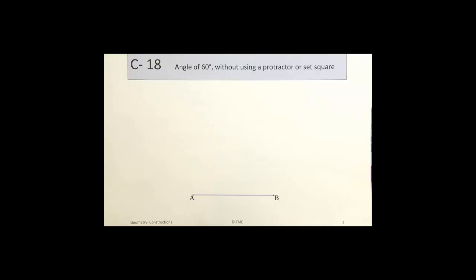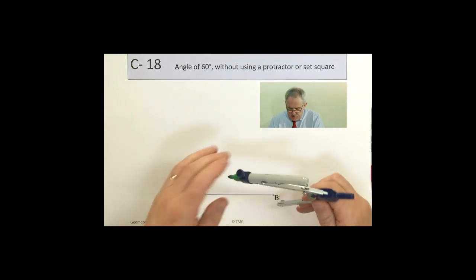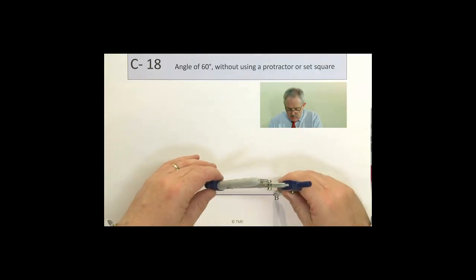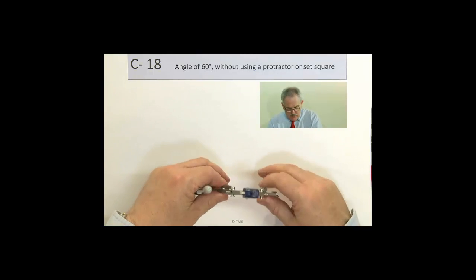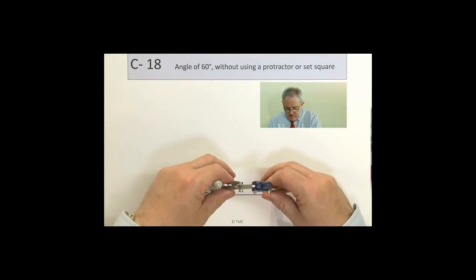So all we need to do is construct a triangle with three sides the same length. Starting here with one side AB, we choose our compass length so that it is exactly the same as AB.